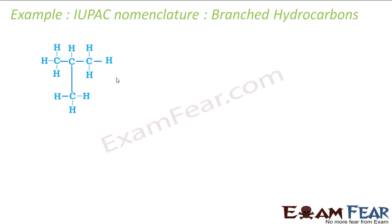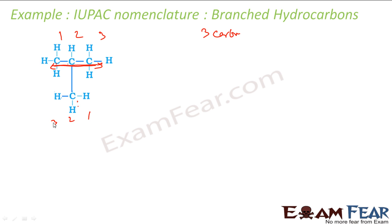For example, consider a molecule where the longest chain has 3 carbons. You can number it from either end — both ways are fine. So let us assume this is the parent chain. There is a side chain — a methyl group — attached to the second carbon. So if I number from one end, that methyl is at position 2.